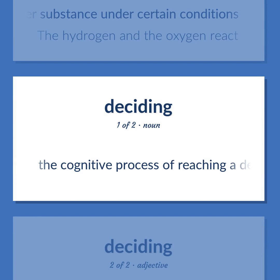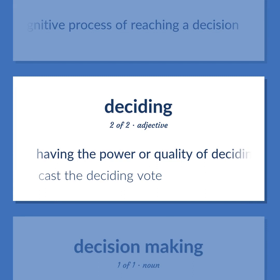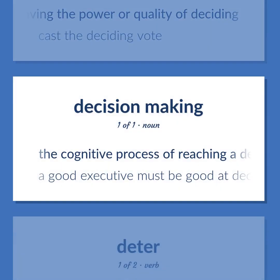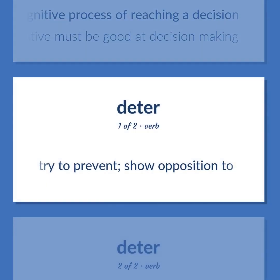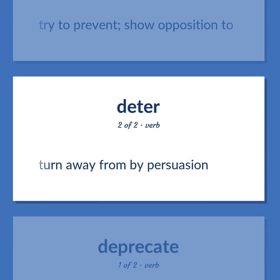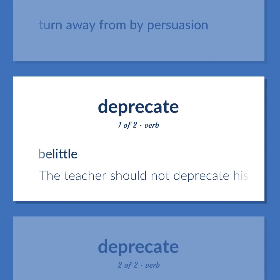The cognitive process of reaching a decision. Having the power or quality of deciding. Cast the deciding vote. The cognitive process of reaching a decision. A good executive must be good at decision-making. Try to prevent; show opposition to. Turn away from by persuasion. Belittle. The teacher should not deprecate his students' efforts.